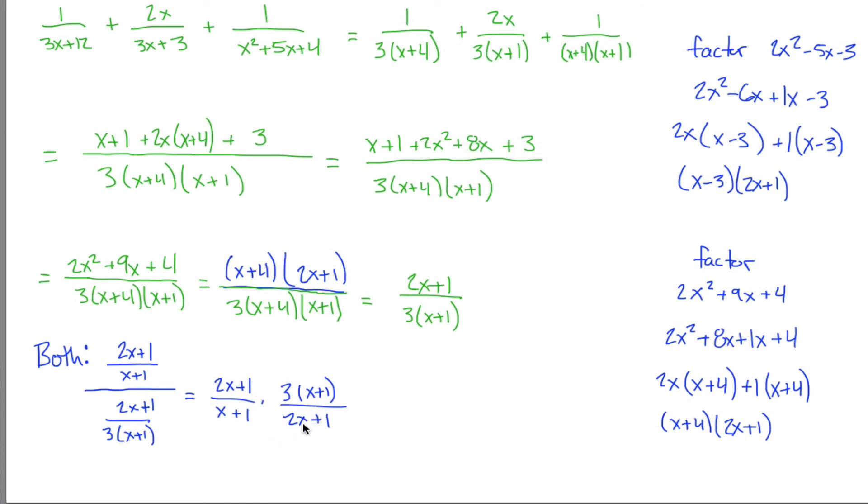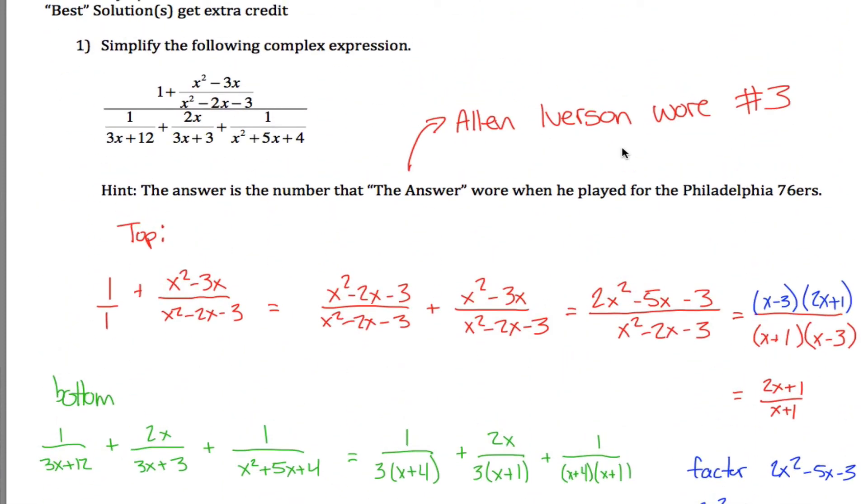This mess is equal to this. But look, now I got 2x plus 1 on the top and the bottom. I can cancel those out. I got an x plus 1 on the top and the bottom. Those cancel out. And all that I'm left with is 3 divided by 1. In other words, 3. 3, the number that Allen Iverson wore.